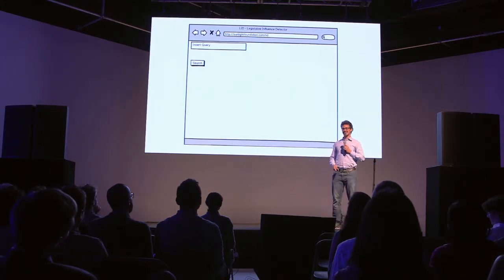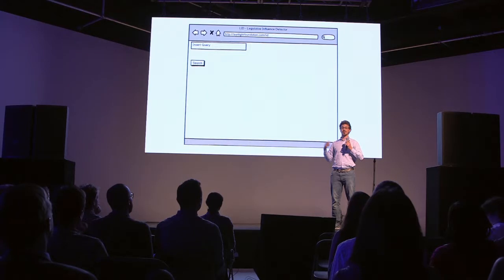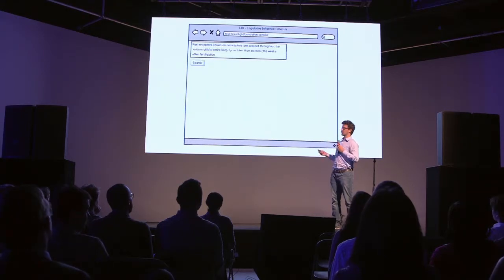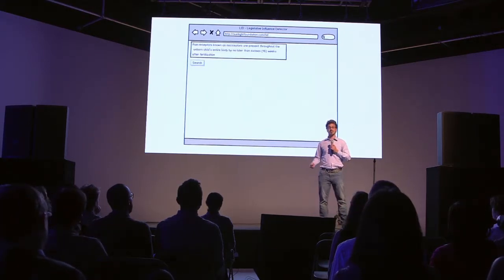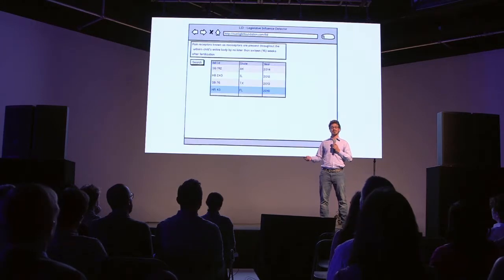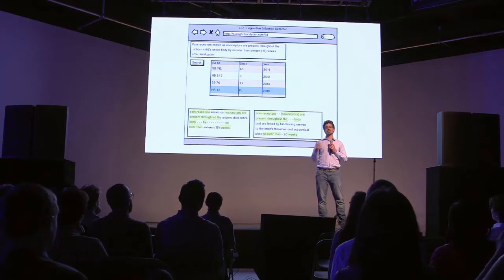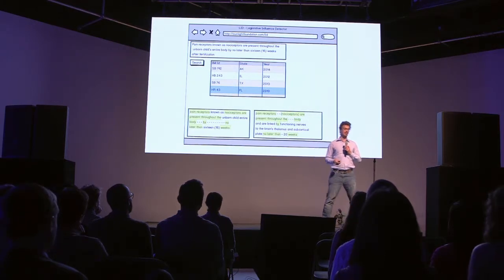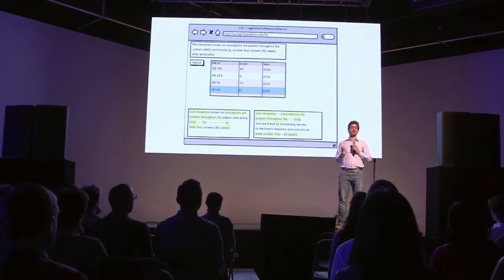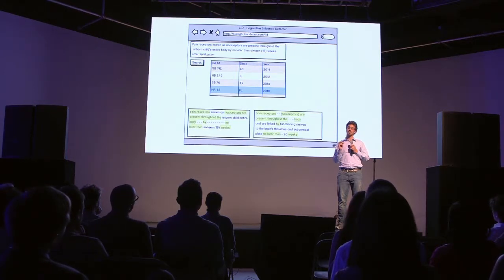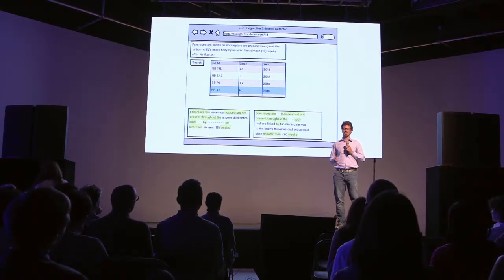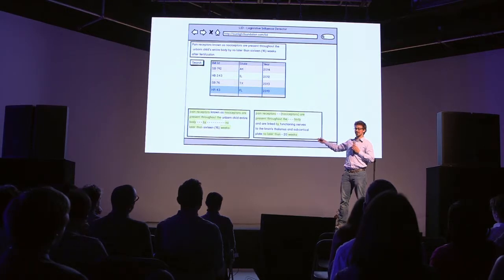It works as follows: you insert text, such as a portion of a bill or the whole document itself, into a search box, and then LID outputs a list of candidate bills. Once the user clicks on one of these candidate bills, LID outputs the shared text between them. LID uses an algorithm from bioinformatics that is used to identify similar regions in DNA sequences, and that's how it actually finds this similar text.